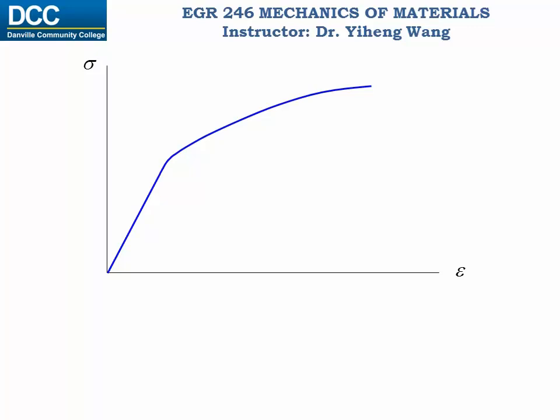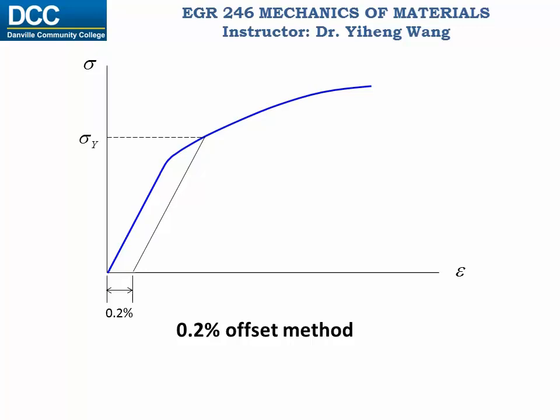Sometimes the yield stress is not very clear on the stress-strain diagram. For this type of diagram, we can use the 0.2% offset method to determine the yield stress. This means we read 0.2% on the strain axis, which is a strain of 0.002, and from here we draw a line parallel to the straight line on the diagram. Where this line intercepts the diagram is considered the yield stress.